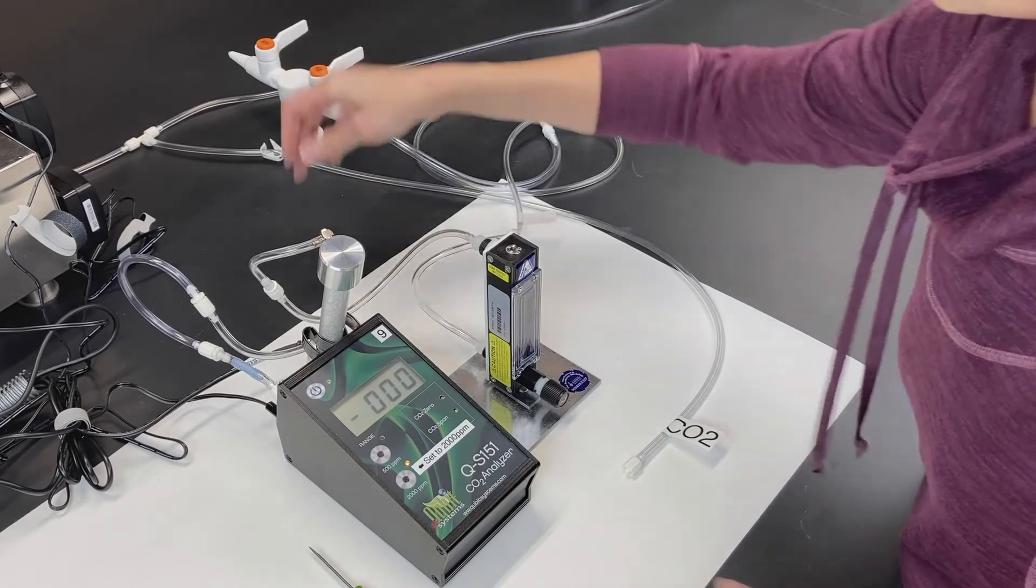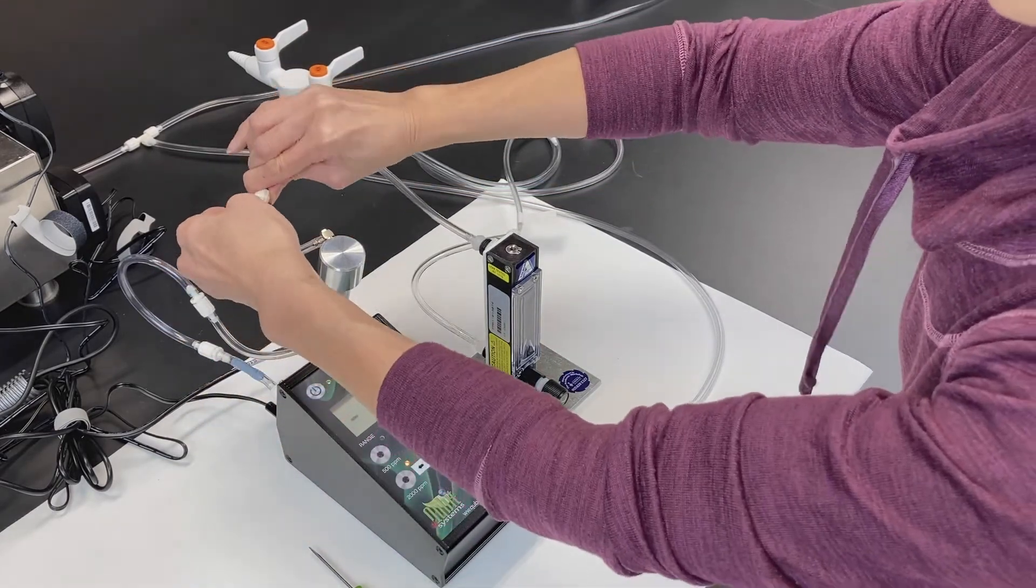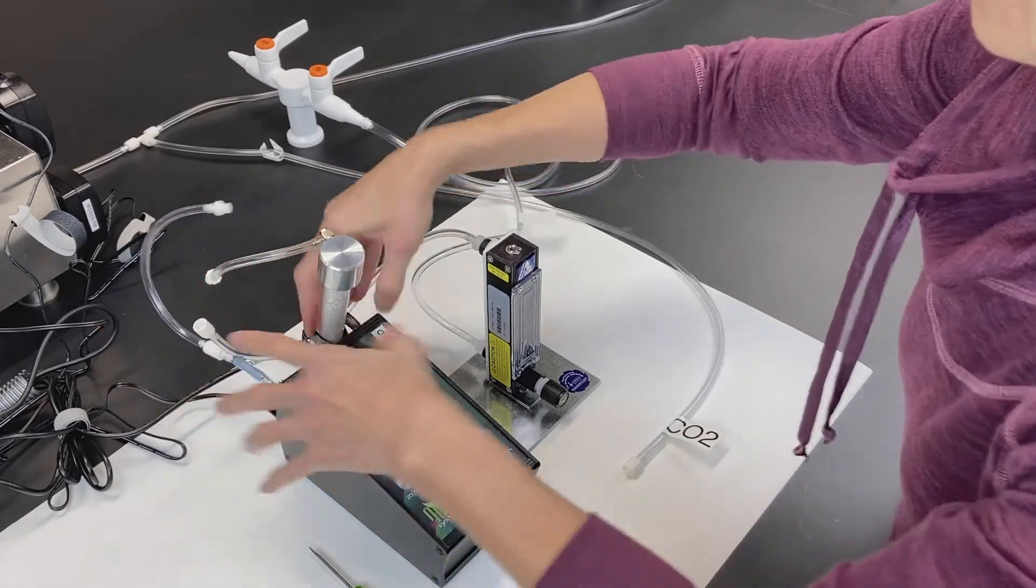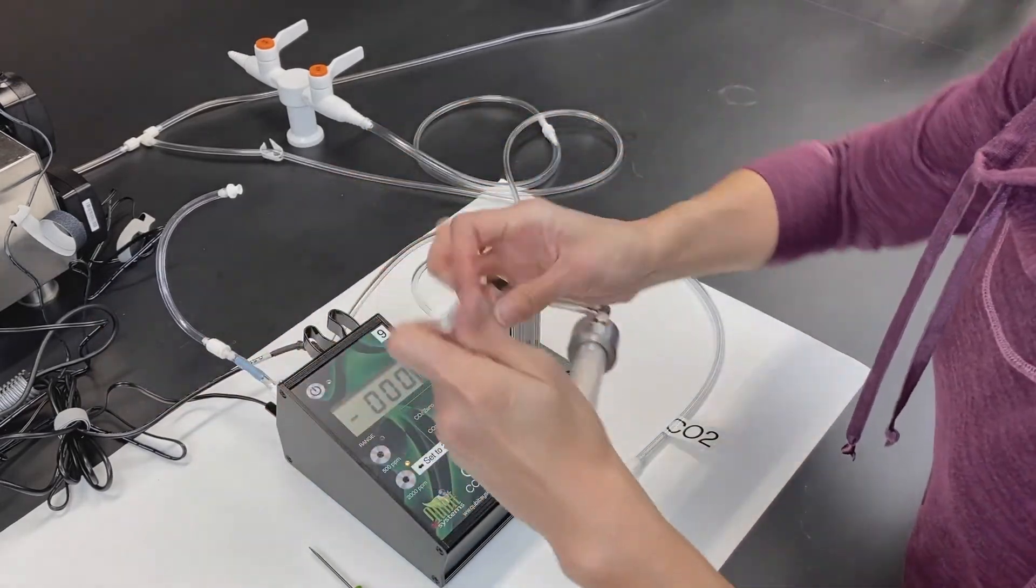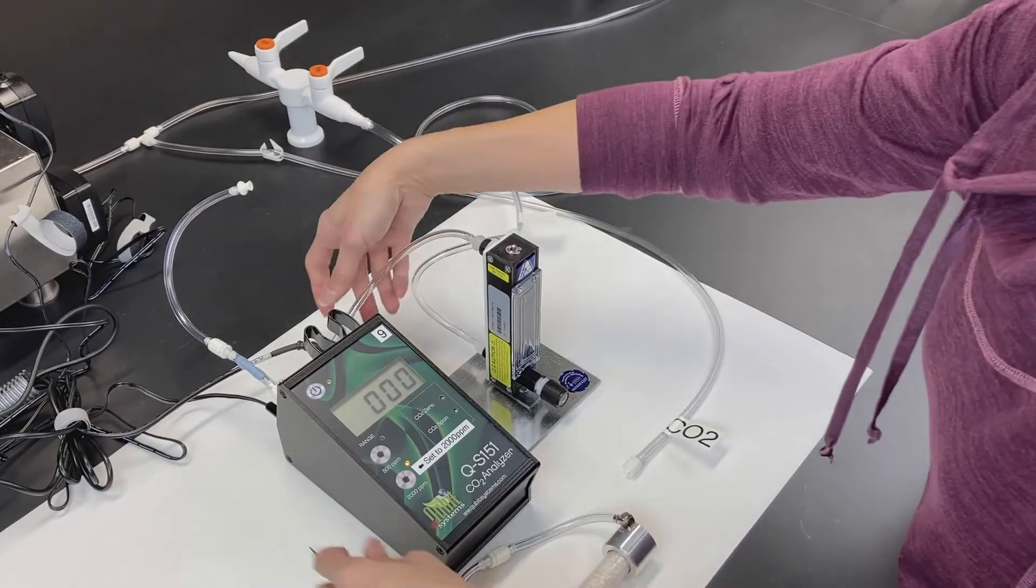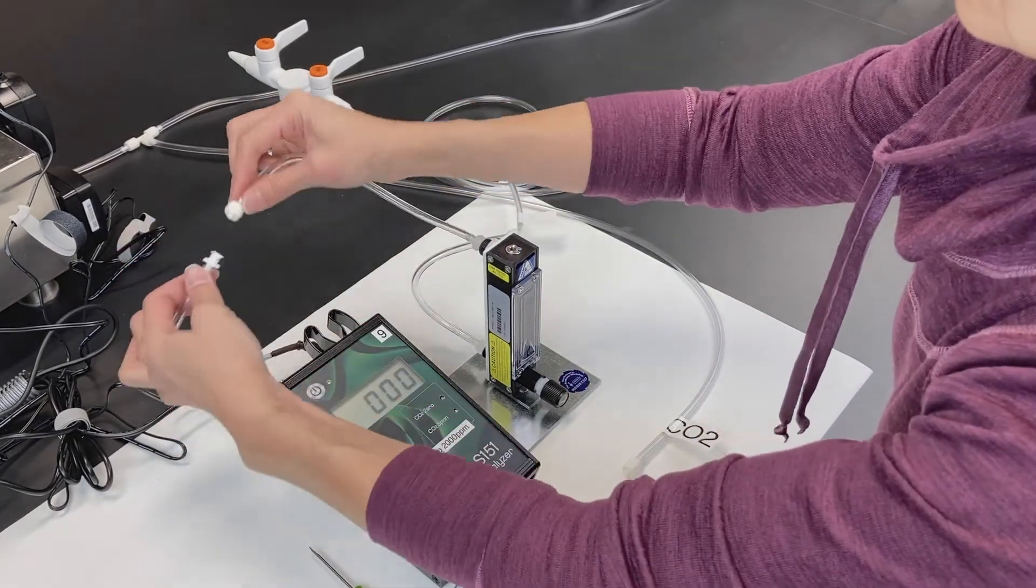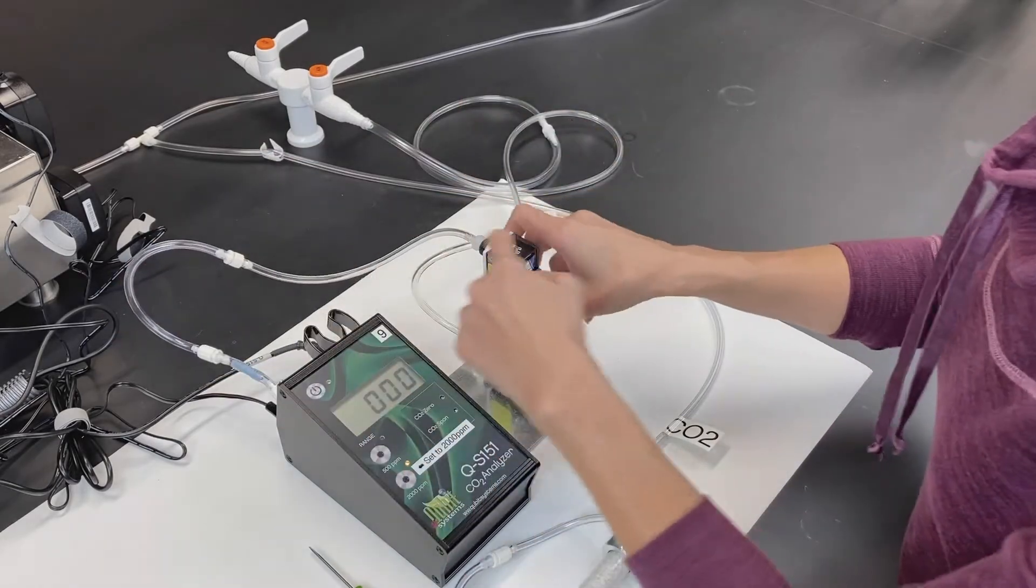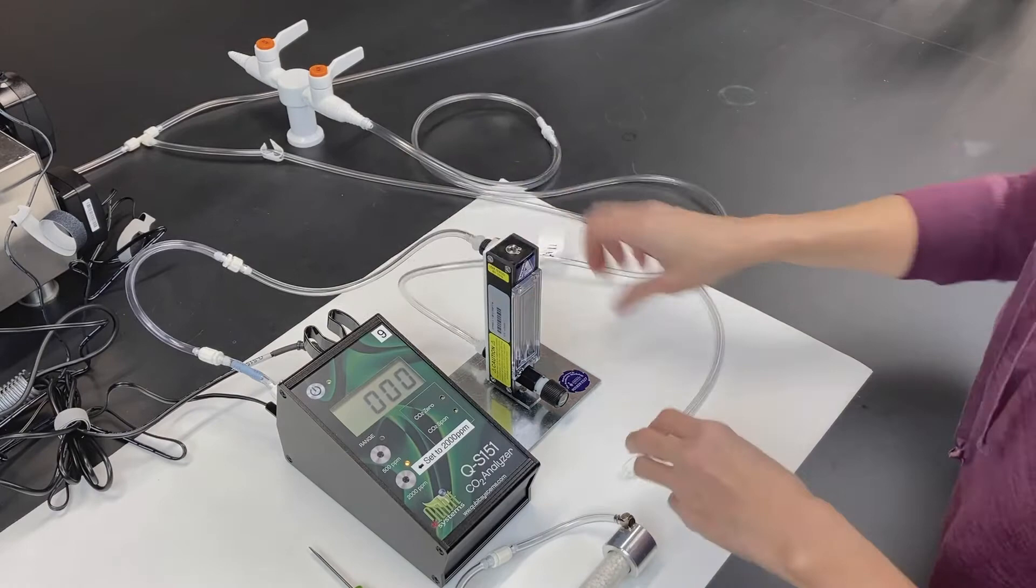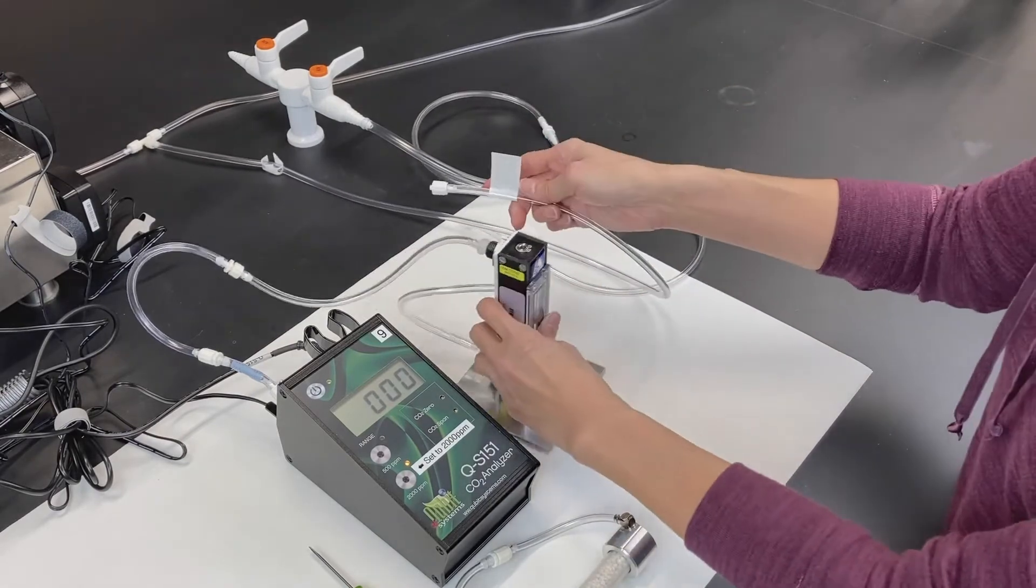Now turn off the air and remove the carbon dioxide scrubbing column. Attach the outflow from the flow meter to the gas analyzer. Now attach the carbon dioxide source to the inflow of the flow meter.